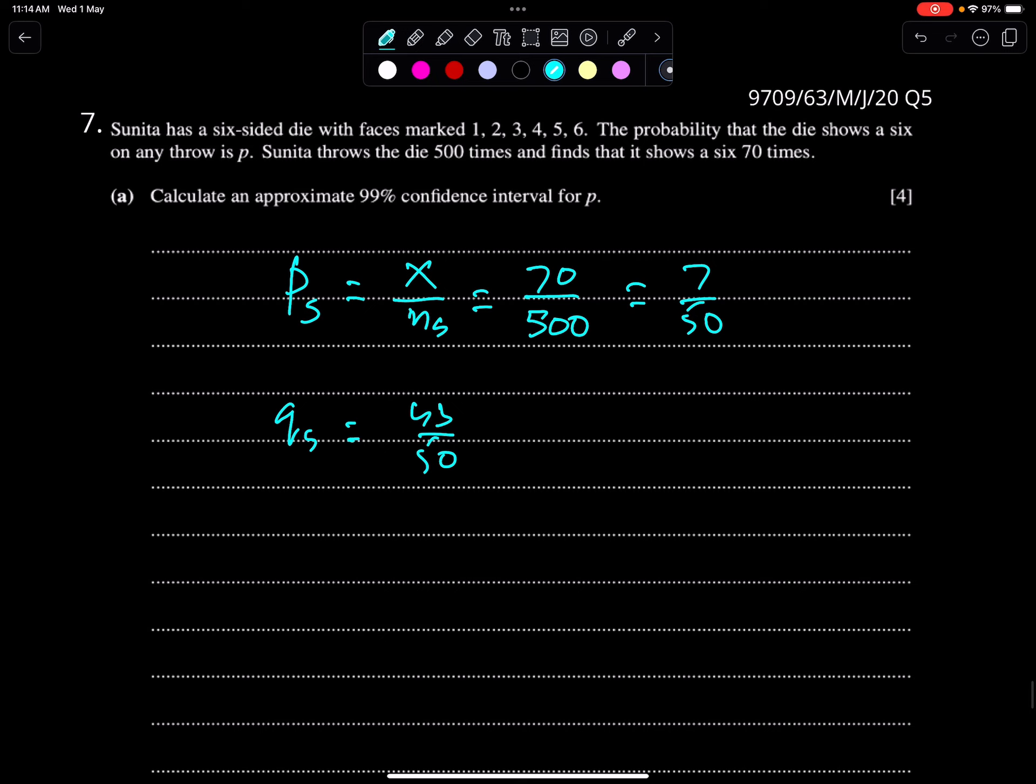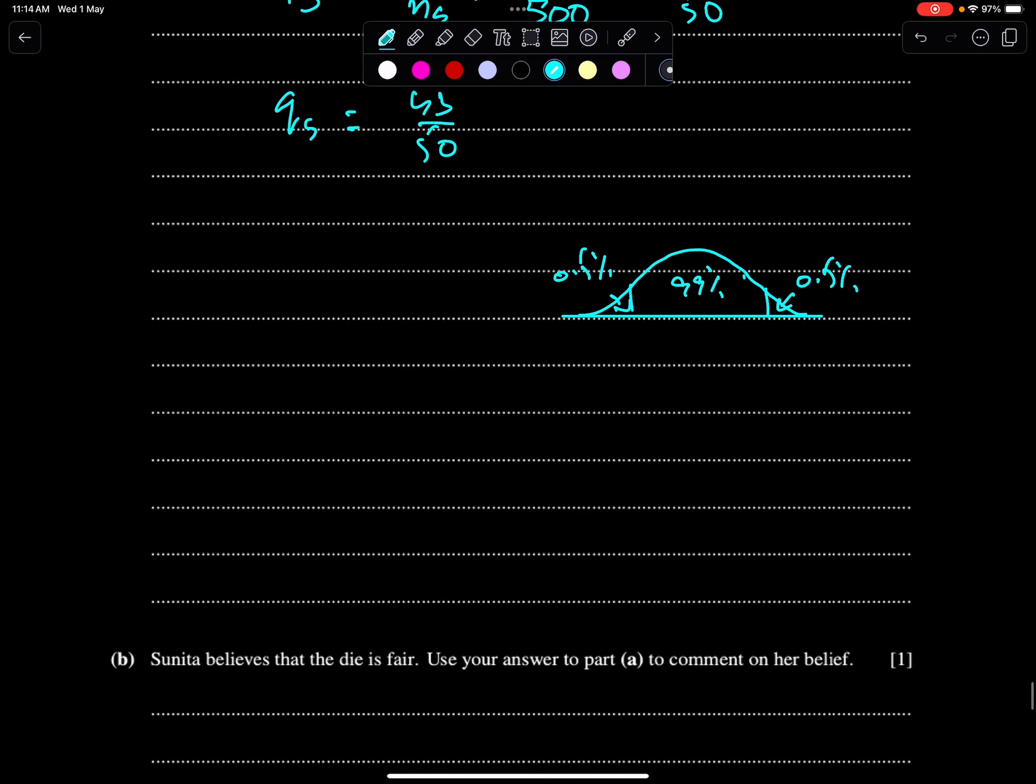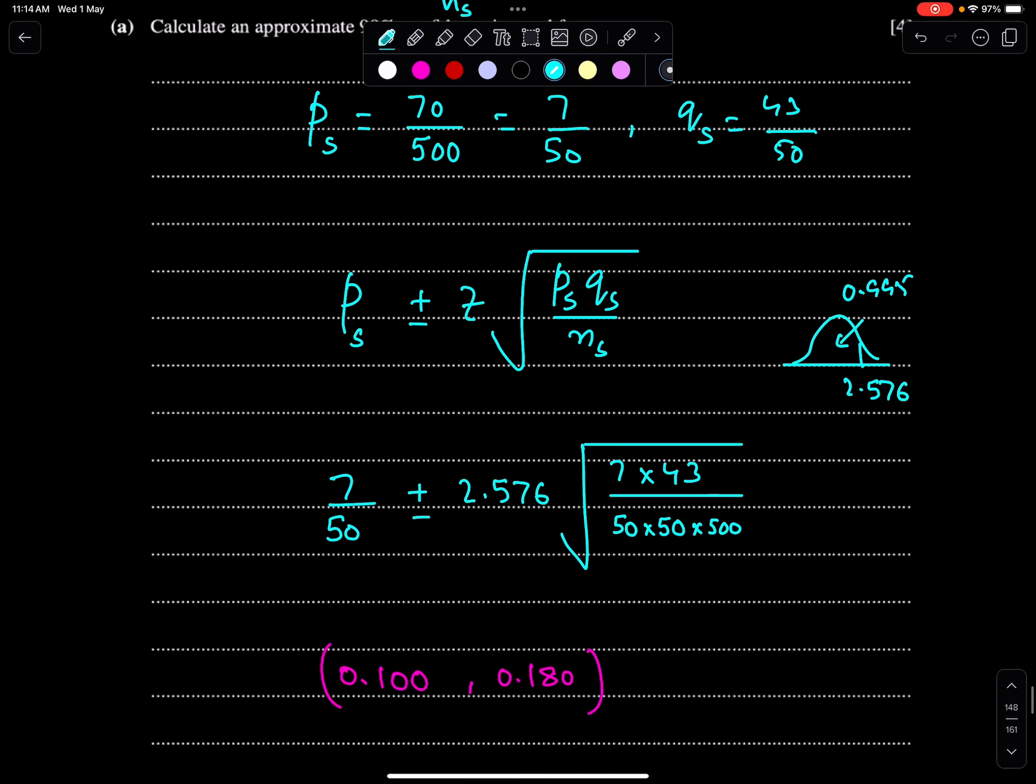Calculate an approximate 99% confidence interval for P. So first we need the value of Z for 99% confidence interval. This area is 0.5%, this is also 0.5%, this is 99%. So the lower tail area, this total would be 99.5%. So we can get the value of Z by using calculator or table. So the value of Z is 2.576.